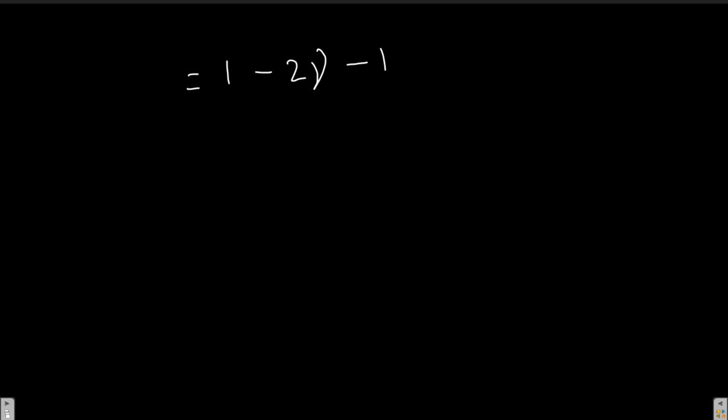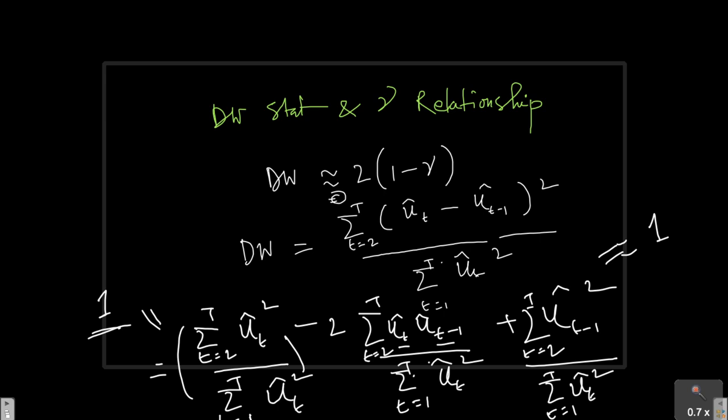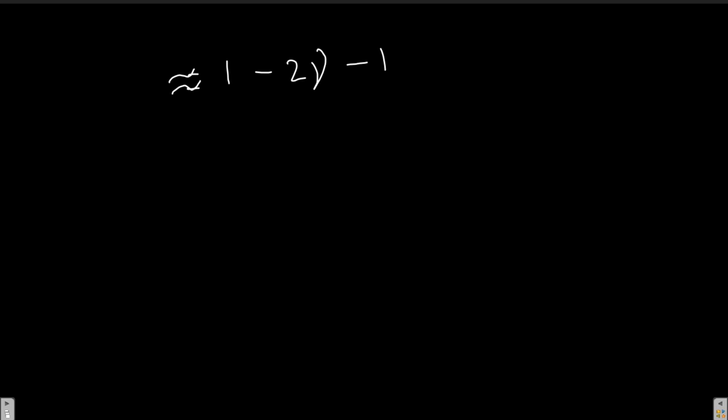So I can actually write down this equation simplified as 1 minus 2γ minus 1. So that is why I write approximately equal. They are not exactly equal because of the approximations I have done here with the summation indices. This is approximately equal to 2 minus 2γ or essentially 2(1-γ).